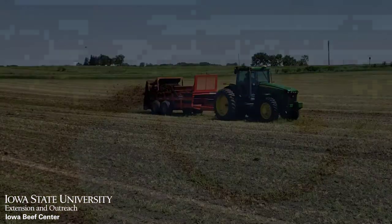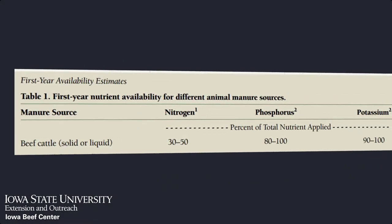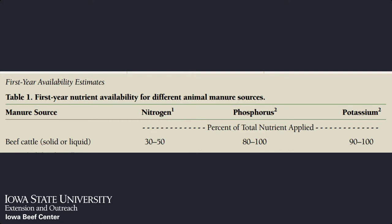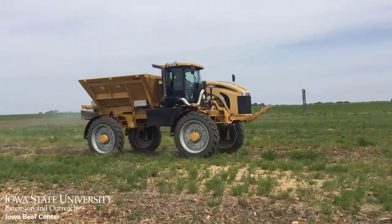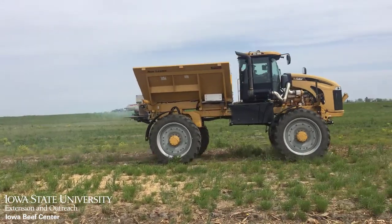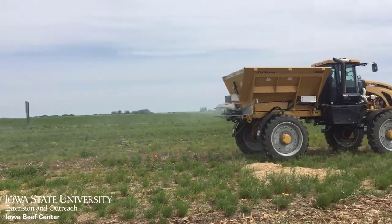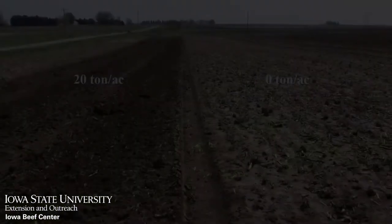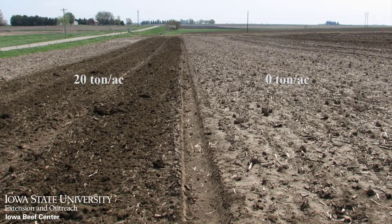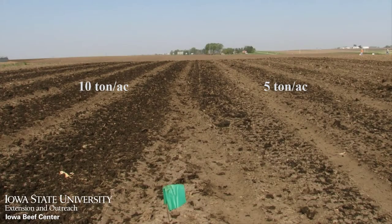Understanding the availability and potential loss of manure nutrients is important. Availability of nitrogen from feedlot manure is estimated to be about 30 to 50 percent. While commercial fertilizer application can be prescribed to apply a specific amount of each nutrient, the nutrient blend in a manure application may not match the crop needs. When using manure as a crop fertilizer, one nutrient may be over-applied and another under-applied.